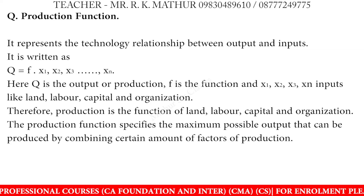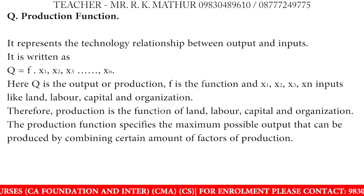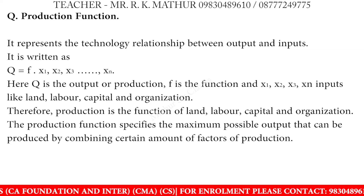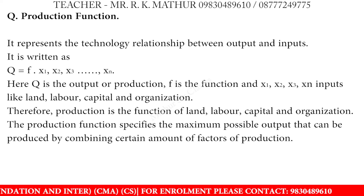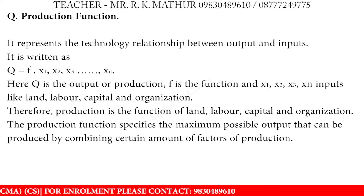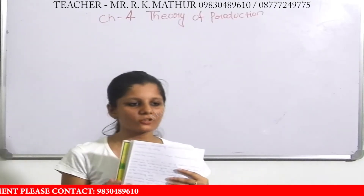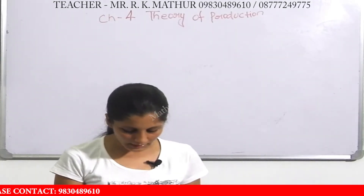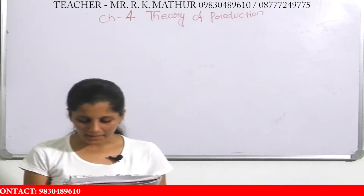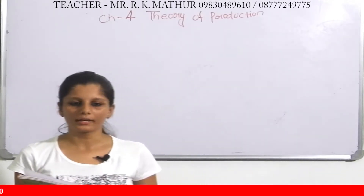Therefore, production is the function of land, labor, capital, and organization. Organization means the firm. Using all of these together is how we produce. The production function specifies the maximum possible output that can be produced by combining certain amounts of factors of production.